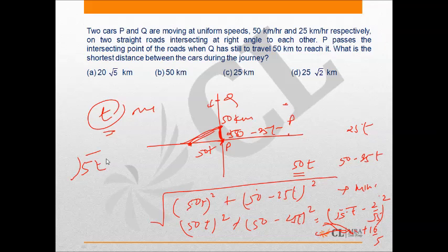Which means root 5t minus 2 upon root 5 will be equal to 0, from where we get t as 2 upon 5.